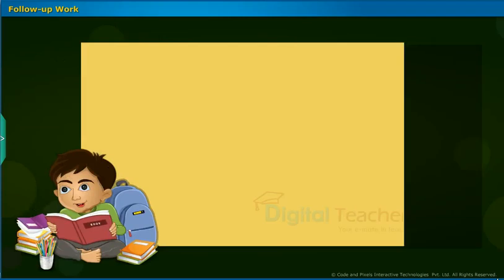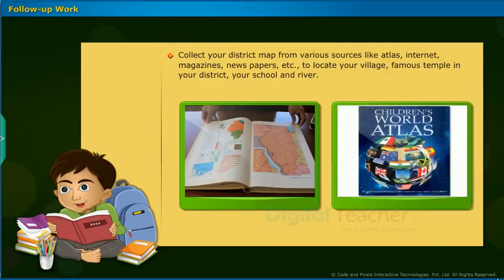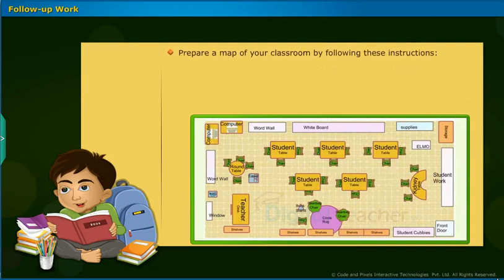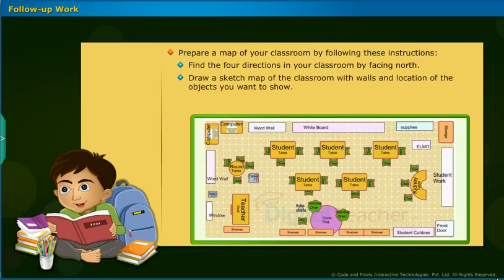Follow-up work: Collect your district map from various sources like an atlas, internet, magazines, or newspapers, to locate your village, a famous temple in your district, your school, and a river. Then prepare a map of your classroom by following these instructions: find the four directions in your classroom by facing north, draw a sketch map of the classroom with walls and the location of objects you want to show, and make an index of the symbols you have used, also mentioning the scale.